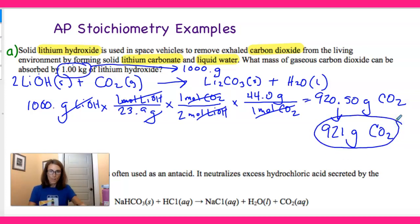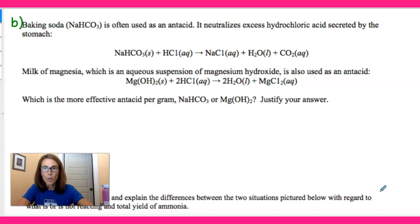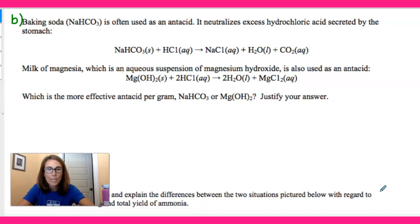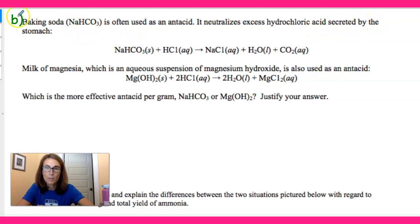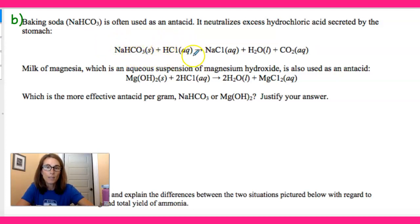That's all you have to do for that problem — pretty simple. Let's take a look at this next problem. Baking soda, sodium bicarbonate, is used as an antacid. It neutralizes excess hydrochloric acid secreted by the stomach. This is an actual reaction used for people that have heartburn. So sodium bicarbonate plus hydrochloric acid — that is actually stomach acid.